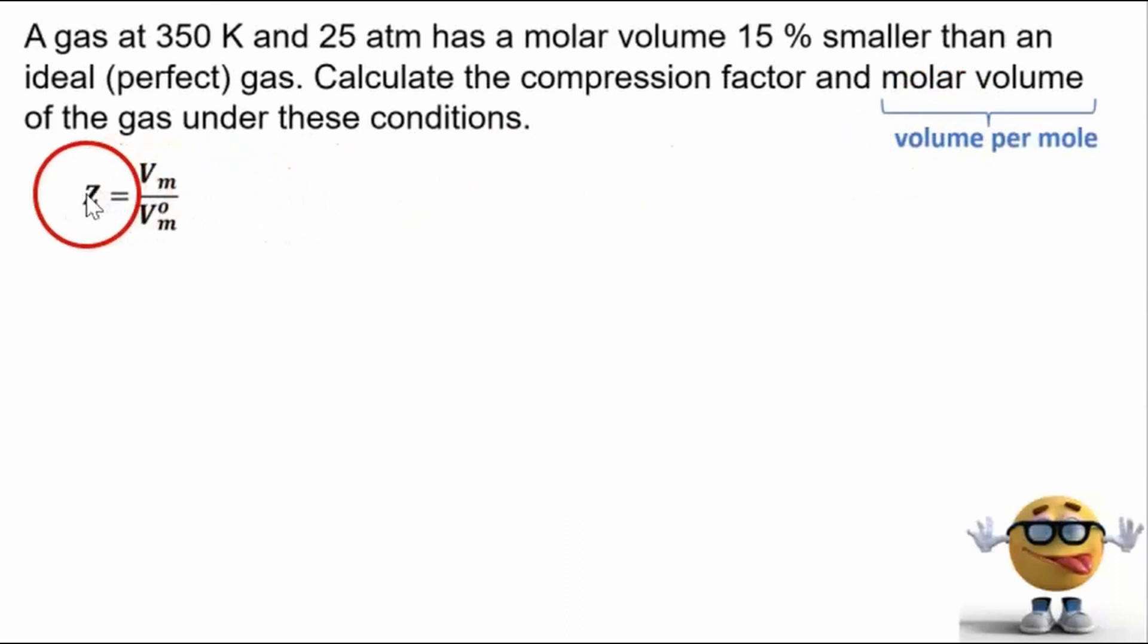And our main equation for the compression factor is Z, the compression factor, equals the molar volume of the real gas divided by the molar volume of the gas if it acted ideally or perfectly. Now there's other equations for the compression factor using the virial equation, but this is the main one to start with, with molar volumes.